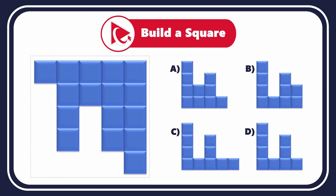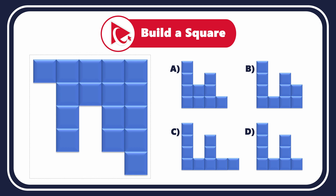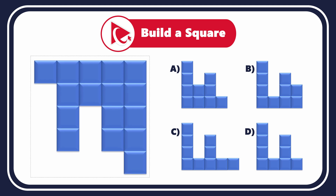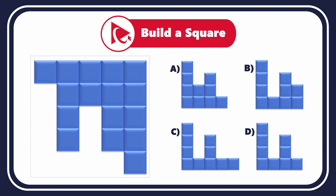You are presented with a partial object which consists of small blue squares. Your goal is to build the large square by selecting one out of four possible choices — A, B, C, and D.